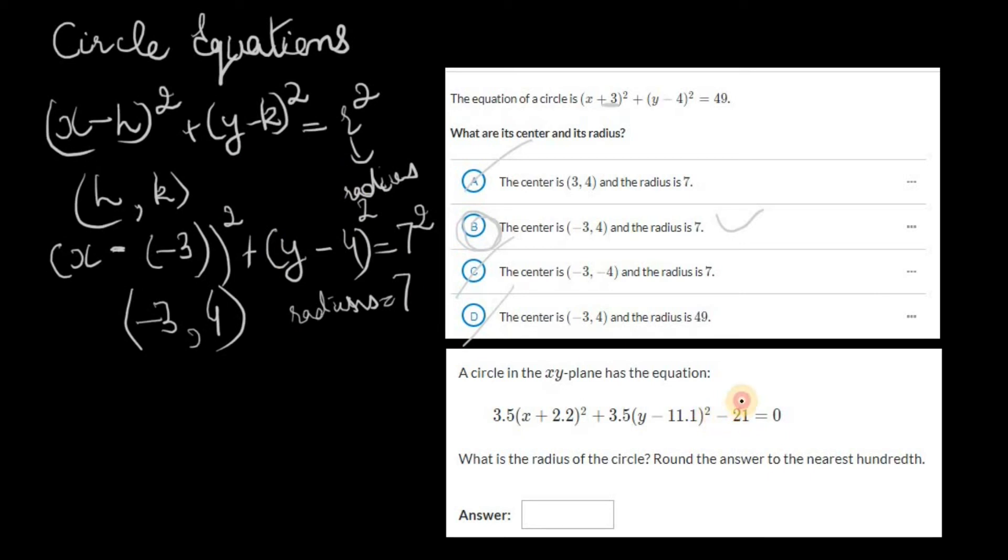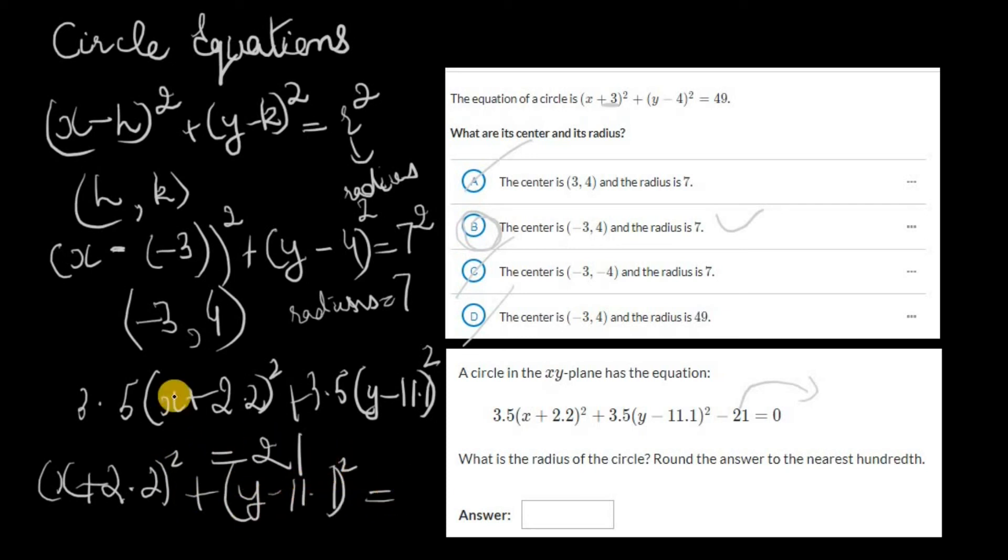You know that this 21 is going to the other side because we're going to add 21 to both sides. So this is going to be 3.5(x + 2.2)² + 3.5(y - 11.1)² = 21. Then we can divide both sides of the equation by 3.5 because here we do not have anything multiplying with these parentheses. We need to divide both sides by 3.5 and that's going to give us (x + 2.2)² + (y - 11.1)² = 6.